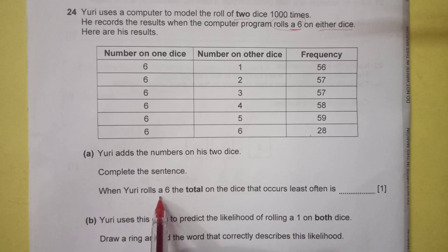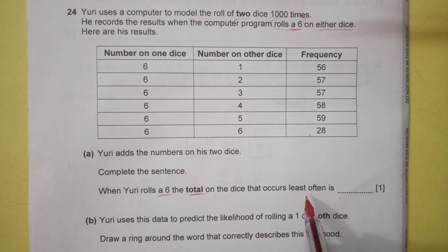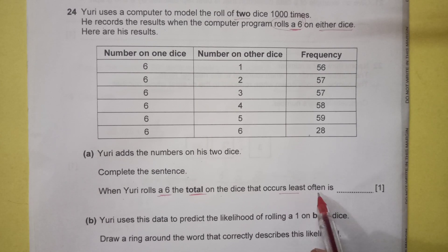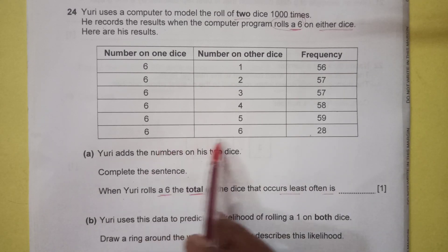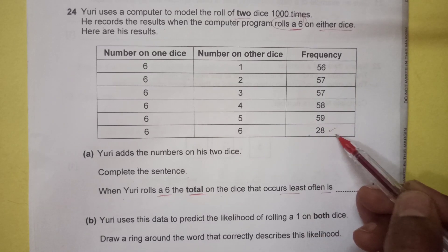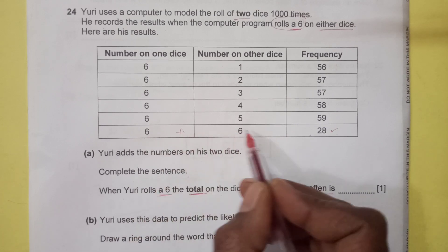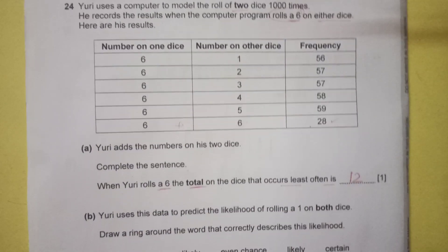When Yuri rolls a six, the total on the dice that occurs least often is what? Least often, you can see the frequency here is 28, the minimum. So the least total is 6 plus 6, that is 12.